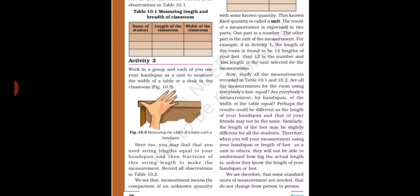You compare the unknown quantity with the known quantity using string, measuring tape, or scale. The result of a measurement is expressed in two parts: one part is a number, and the other part is the unit of measurement.